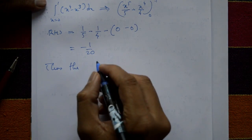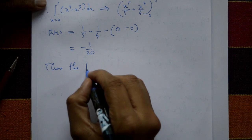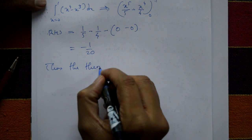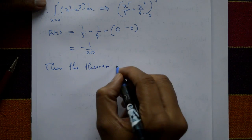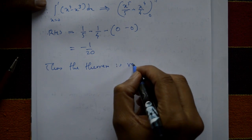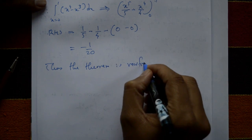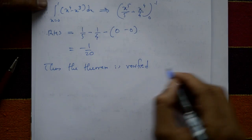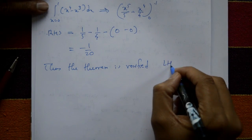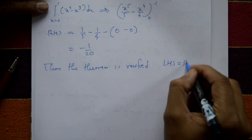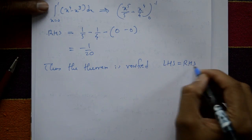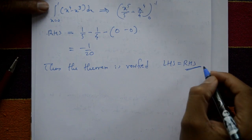Thus we have verified Green's theorem: LHS = RHS = -1/20. The theorem is verified.